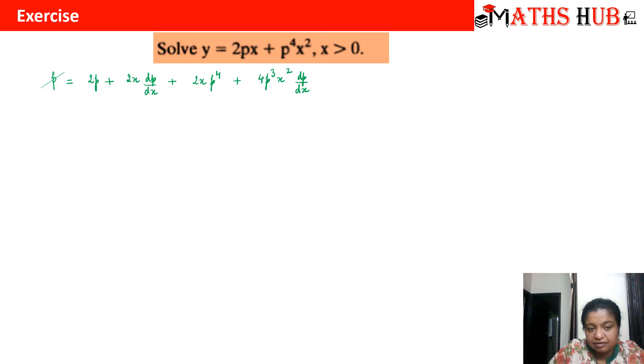p gets cancelled. One of the p will get cancelled. I can take out dp by dx common. So I will get 2x plus 4p cube x square. And I can club these two terms and I will get p common from there, and I will have 2p cube x plus 1.